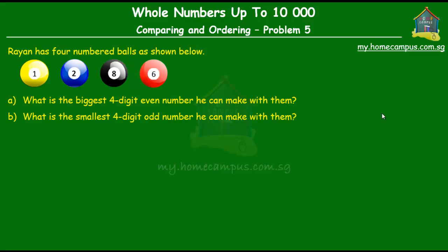Rayyan has four numbered balls as shown below, and the numbers on the balls are 1, 2, 8, and 6. Part A of the question is: what is the biggest four-digit even number he can make with them? And part B of the question is: what's the smallest four-digit odd number he can make with them?